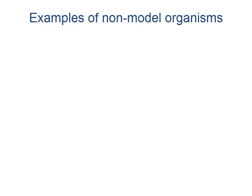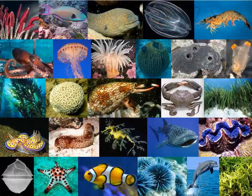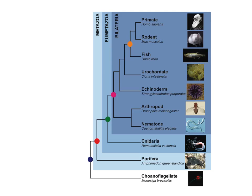What are examples of non-model organisms? Well, essentially anything in the realm of life is a non-model organism, from bacteria to fungi to plants and animals. Looking just at the animal tree of life, we readily observe diverse and complex features that are represented in different groups of organisms.